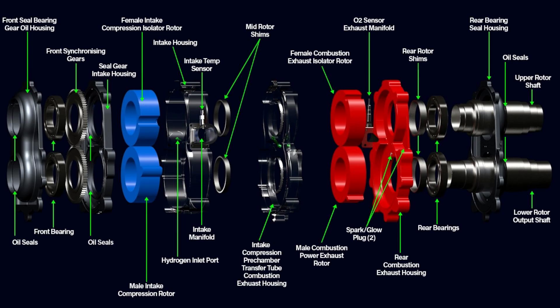The mid rotor shims, the intake compression rotor, the combustion pre-chamber transfer tube combustion exhaust housing, the female combustion exhaust isolator rotor, the male combustion power exhaust rotor, and the O2 sensor exhaust manifold.